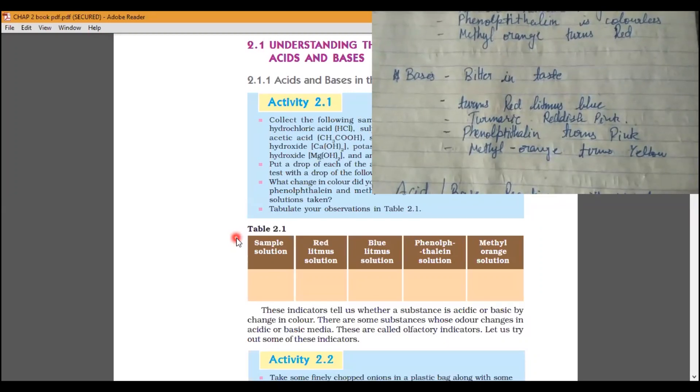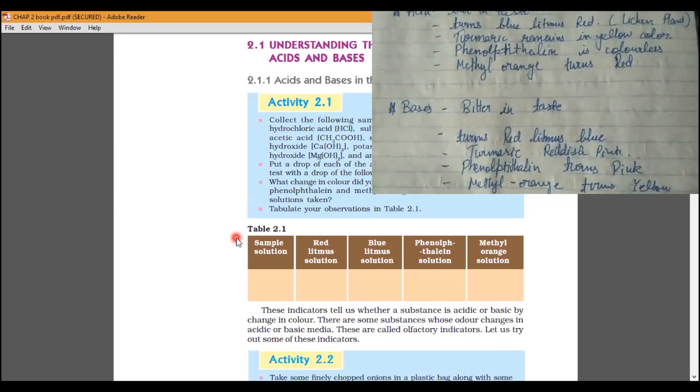So, we will see how the colors change. Phenophthalene is colorless in acid. Phenophthalene is pink in base. Methyl orange is red in acid and yellow in base. So, this was so much covered up in our first topic.